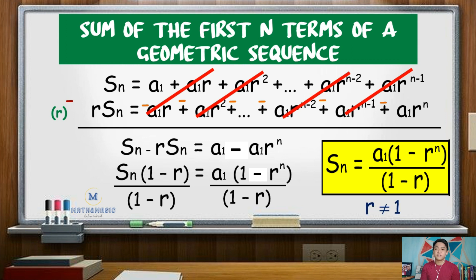Thus, we have the formula for the sum of the first n terms of a geometric sequence. Also, take note that the value of r, or the common ratio, for this formula should not be equal to 1. If it is equal to 1, we simply use n times a sub 1, or the number of terms times the first term.